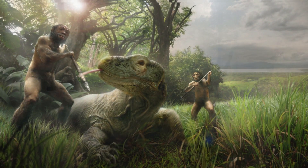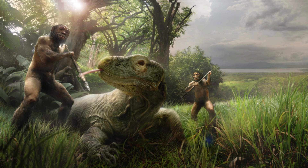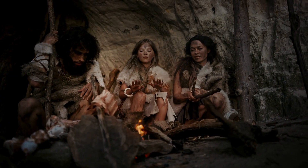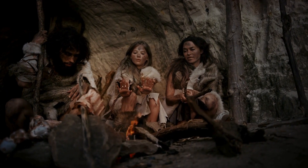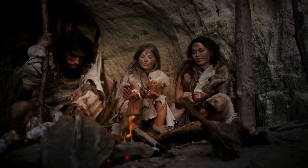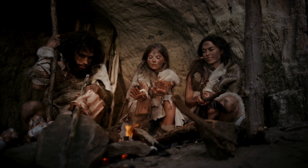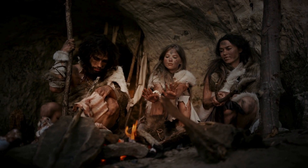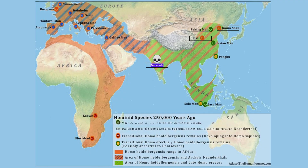Given the evidence, Homo floresiensis was likely a species uniquely adapted to its small island habitat, evolving separately for over a million years. The Denisovans, on the other hand, likely arrived later — around 600,000 years ago — and spread across a wider area of Asia and Southeast Asia. Some Denisovan fossils may yet be undiscovered, but possible candidates could include Narmada in India, and Dali, Jinniushan, Maba, and Xujiyao in China, suggesting Denisovans once had a much broader range than previously thought.